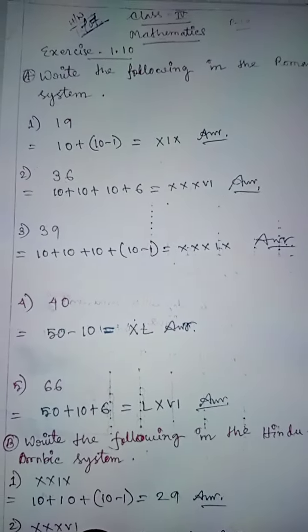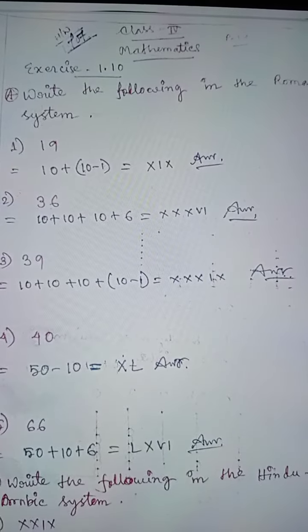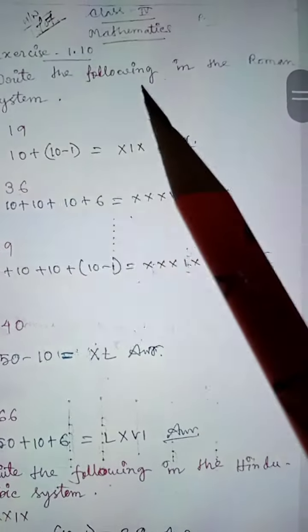Hello everyone, today's date is July 15th, 2021. For our class homework, write the following in the Roman system.